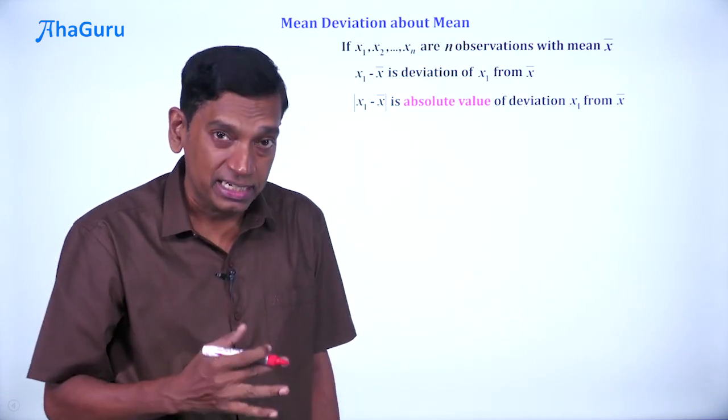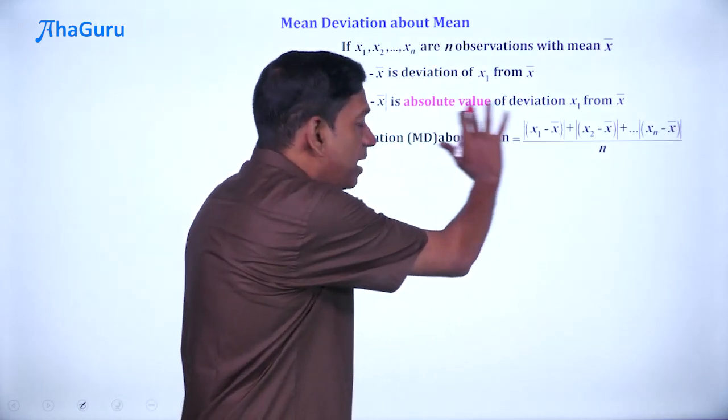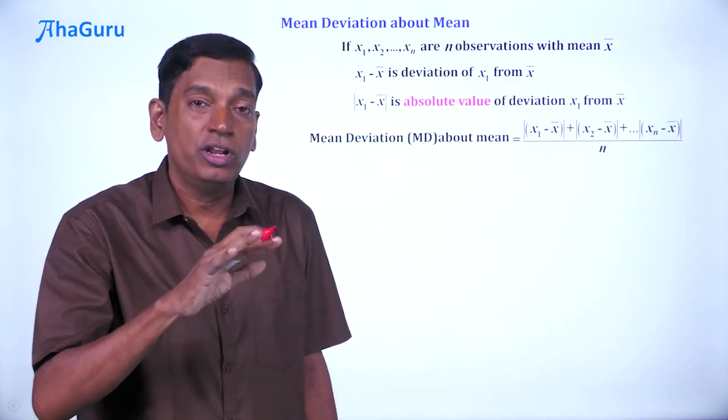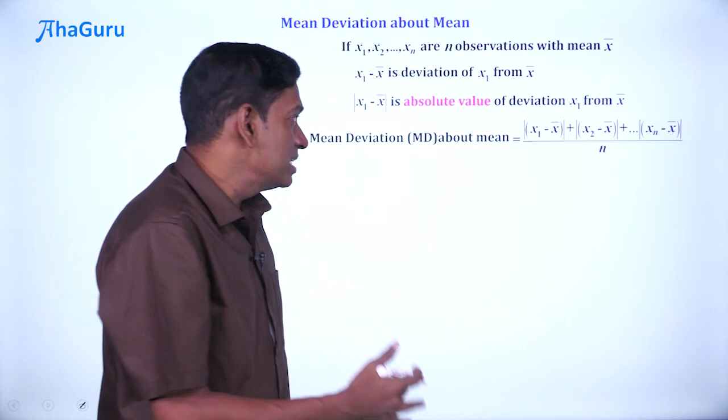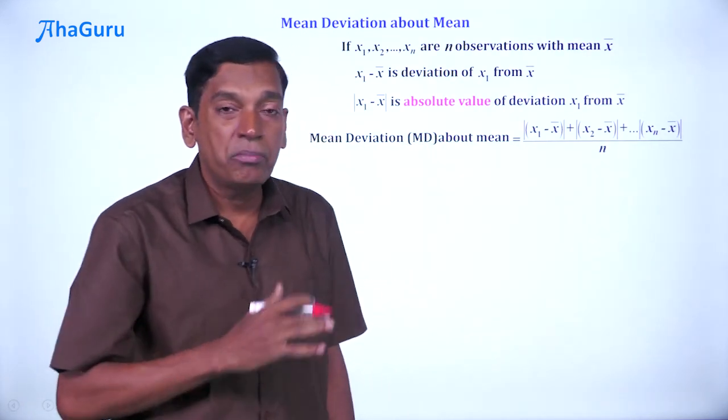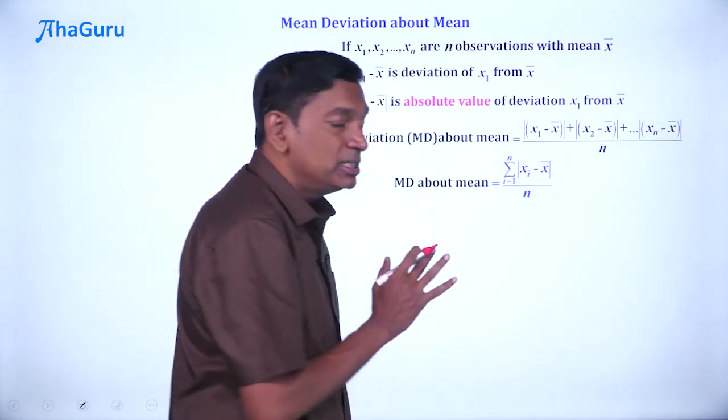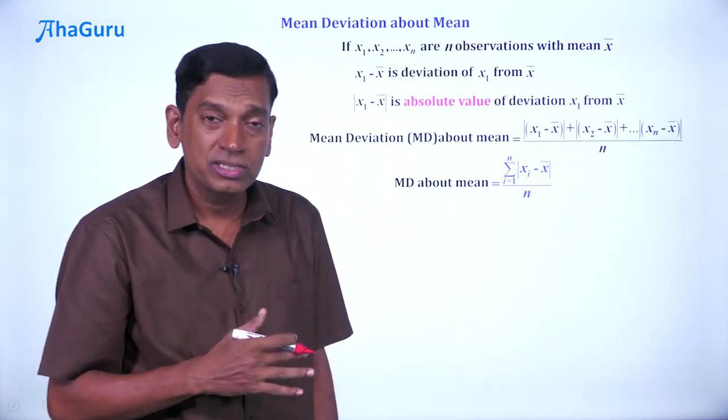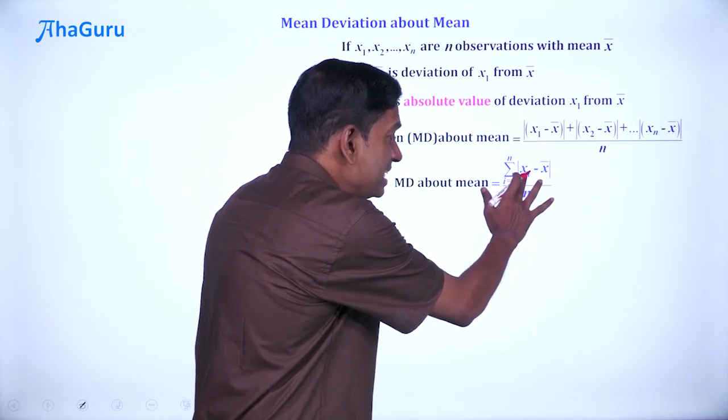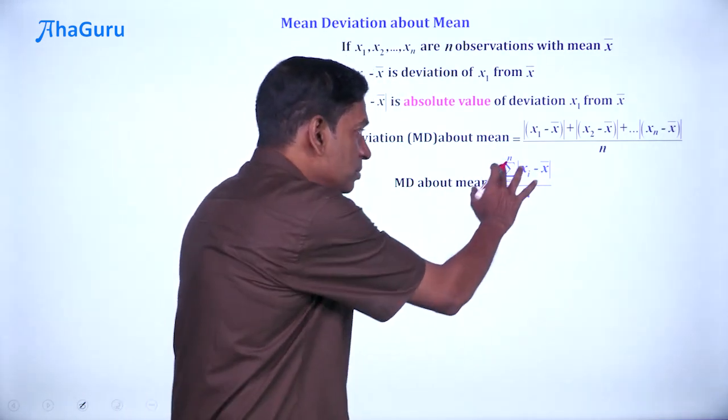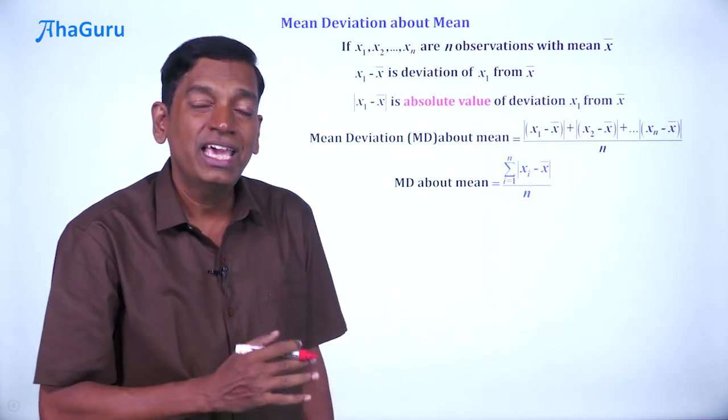Therefore, the mean deviation about mean is defined in the following way: you add all the absolute values, |x1 - x̄|, |x2 - x̄|, etc., and then divide by n to take average. So this is the mean deviation or MD about mean. Now, we can also write this as Σ(i=1 to n) |xi - x̄| / n. The sigma notation is very important because this keeps coming up in statistics. This is just a short notation for whatever we have there.